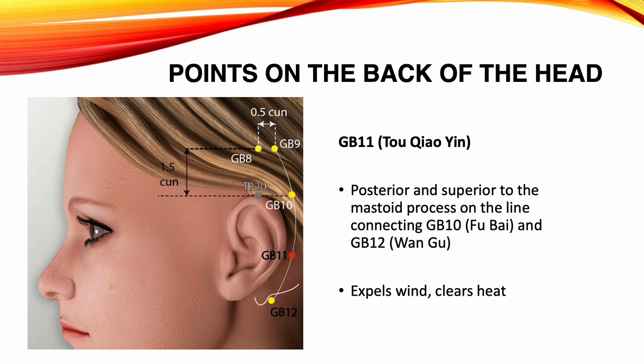Gallbladder 11, Tau Chau Yin. Location: posterior and superior to the mastoid process, on the line connecting Gallbladder 10 and Gallbladder 12. Functions: expels wind, clears heat. Indications: headache, stiffness of the neck, eye pain, tinnitus, deafness, sore throat, chest and hypochondriac area pain, hypothyroidism.